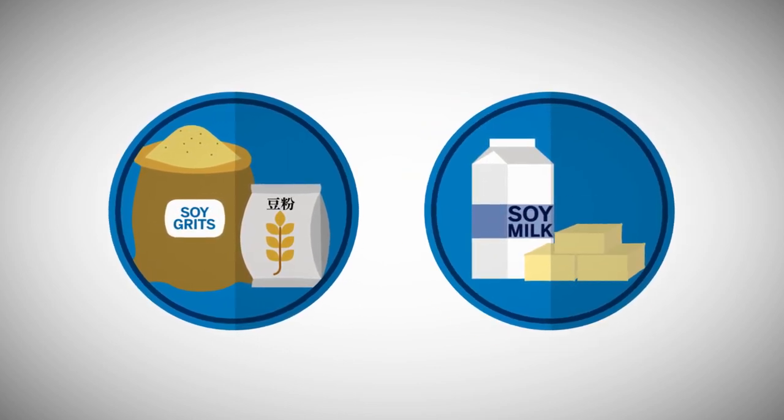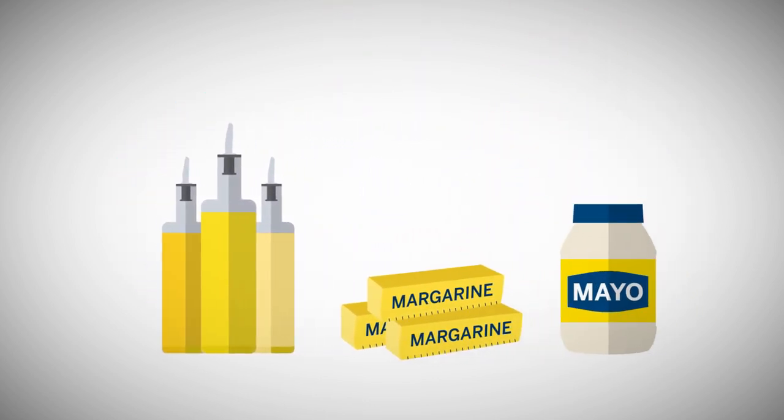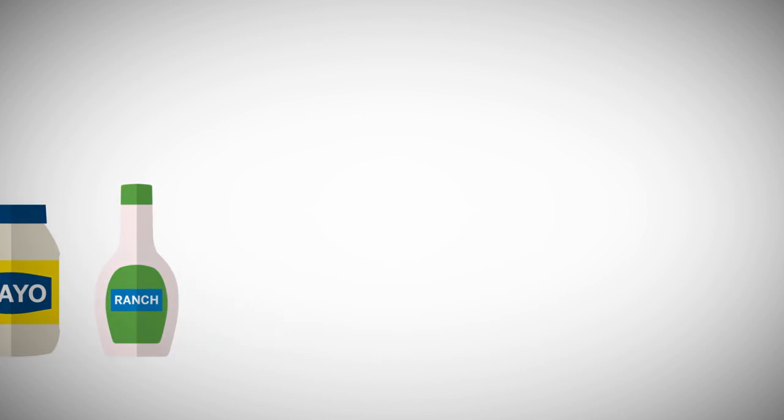After initial processing, soybean oil is further refined and used in foods such as cooking oils, margarines, mayonnaise and salad dressings, as well as industrial chemicals.